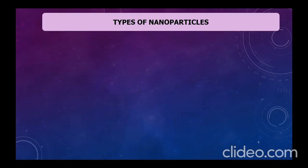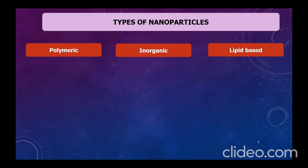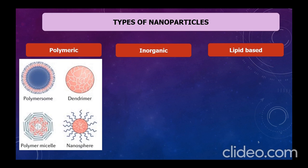There are three types of nanoparticles: polymeric, inorganic, and lipidic. Polymeric nanoparticles are biocompatible and biodegradable — made up of chitosan, human serum albumin, or bovine serum albumin. They play a prominent role in therapeutic and receptor-mediated drug delivery systems like polymersomes, dendrimers, polymer micelles, and nanospheres. Based on their preparation method, they are shaped as nanocapsules and nanospheres with improved stability.